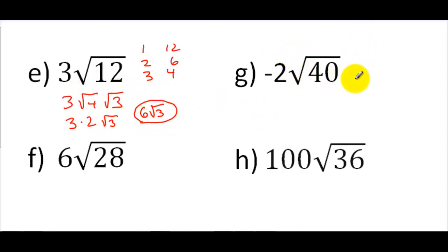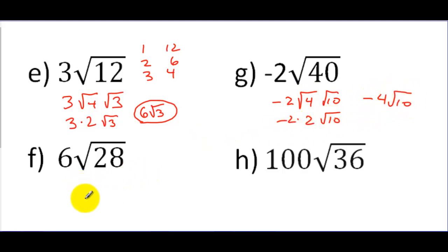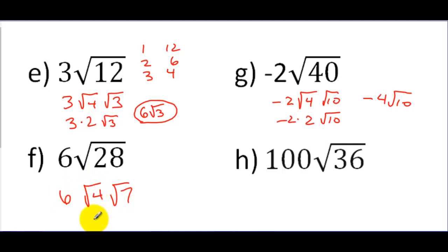Here's another example. For the square root of 40, this breaks down into the square root of 4 and the square root of 10, and the negative 2 is outside. I know the square root of 4 is 2, so this turns into negative 4 times the square root of 10. The square root of 28 breaks down into the square root of 4 and the square root of 7, with 6 outside. So 6 times 2 gives us 12 times the square root of 7.